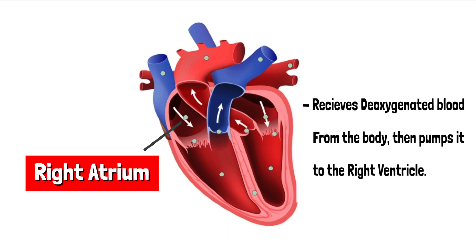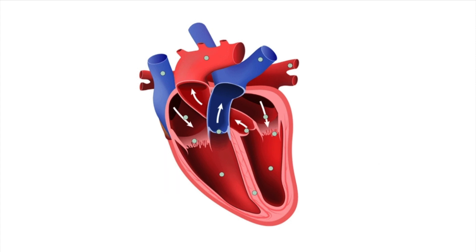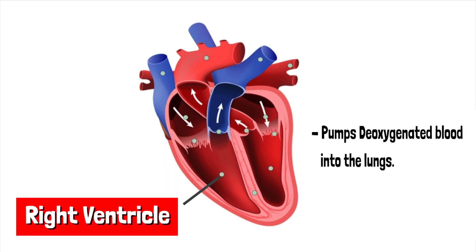The right atrium — it receives deoxygenated blood from the body, then pumps it into the right ventricle. The right ventricle — it pumps deoxygenated blood into the lungs.